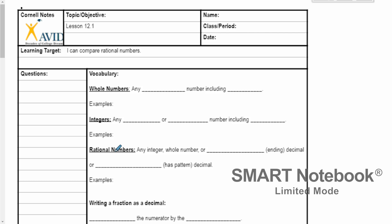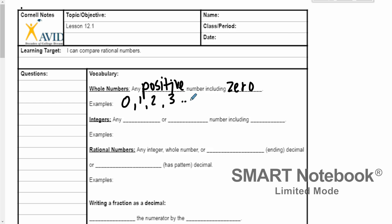So let's talk about whole numbers. Whole numbers are any positive number, including 0. Some examples would be like 0, 1, 2, 3, and so on. Any positive number including 0 — that's a whole number.